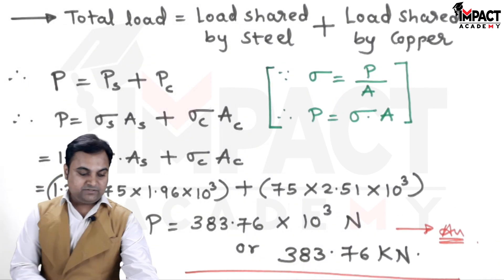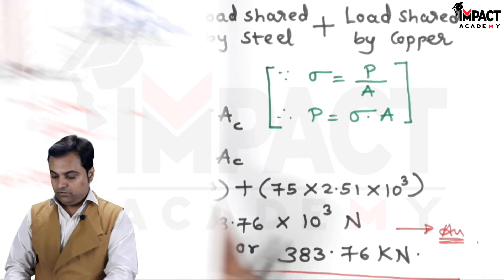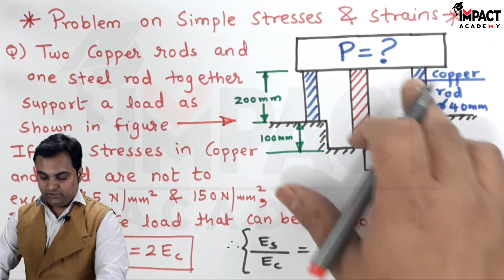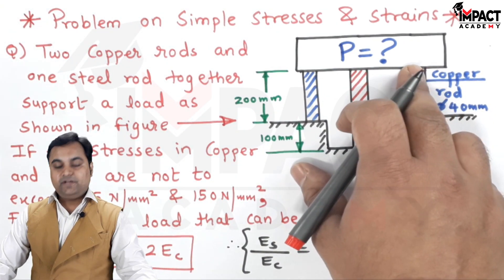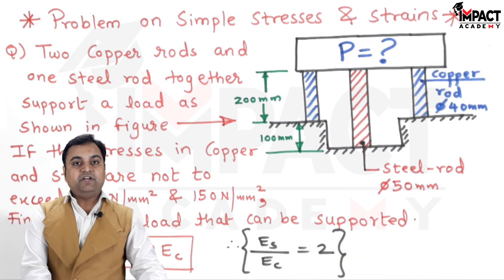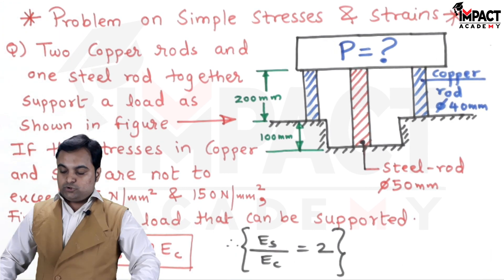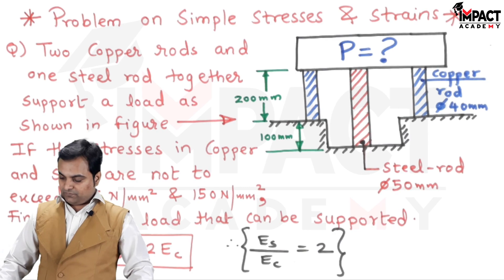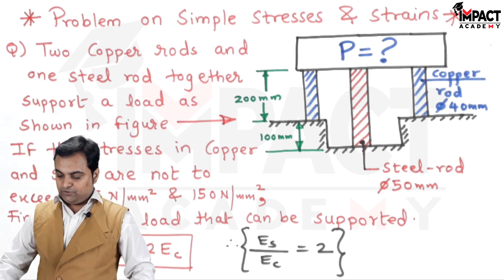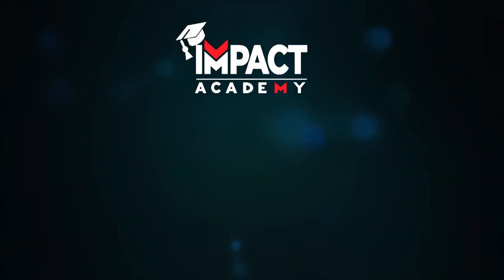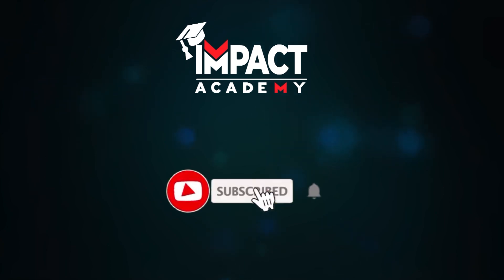That's the final answer — the total safe load which can be supported is 383.76 kN, shared by both the steel and copper rods. If you find my videos helpful, please like, share, comment, and subscribe to our channel. Thanks for watching.